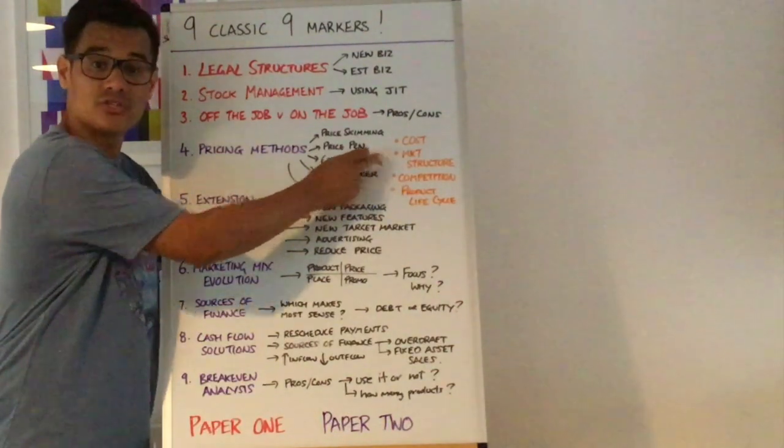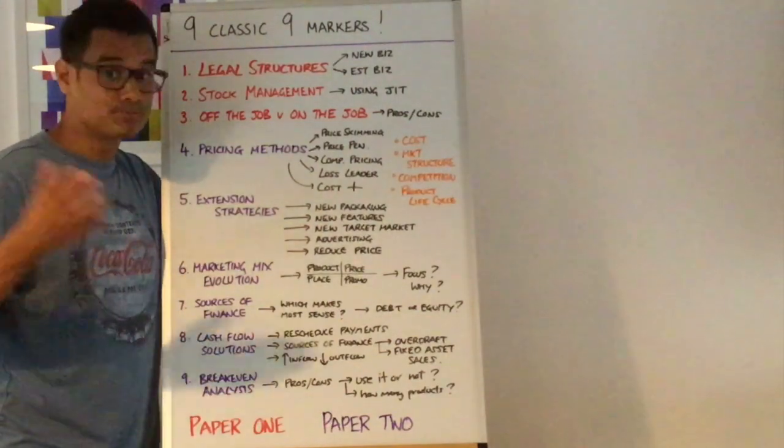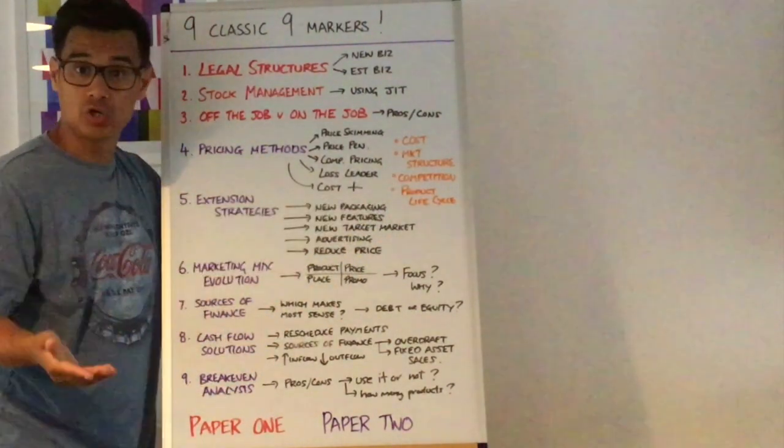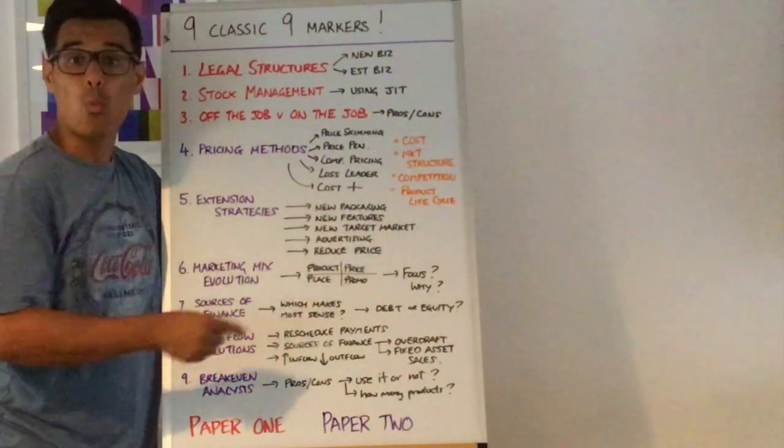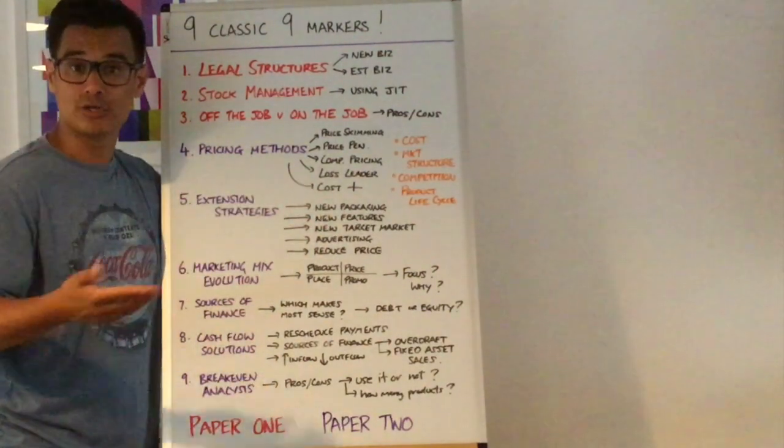So you're thinking is it a competitive market, is it an oligopoly or is it a monopoly, whichever one, and then looking at the competition, what are the competition doing that exists in that market and then also where on the product lifecycle is your product because that could make a difference.